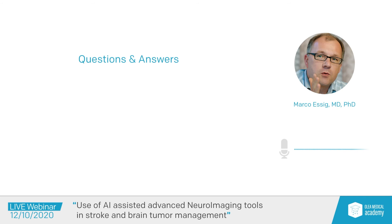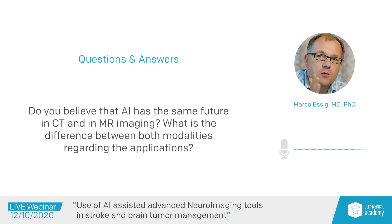Another question: do you believe that artificial intelligence has the same future in CT and in MR imaging? What is the difference between both modalities regarding applications? Well, we can use these tools in both modalities. The stroke tool works with CT data and also with MRI data, as you have seen. There's not really a significant difference. What we are learning is that there's so much information in our imaging data that in the past we have only scratched the surface — there is far more information we cannot catch with the human eye and which we really need algorithms for. This information exists in CT data, in ultrasound data, and in MR data; there's no real significant difference.